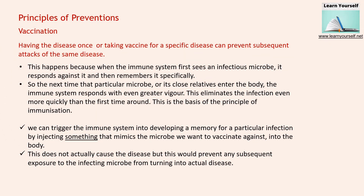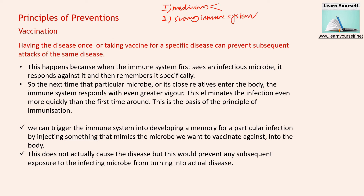The second basic principle of prevention of infectious disease is the availability of proper and sufficient food for everyone. To summarize, we have discussed three pathways of prevention: first, via medicine — symptomatic relief medicine and medicine that kills microbial infection; second, prevention through leading a healthy life, having sufficient nutritious food, and building a strong immune system; and third, vaccination.